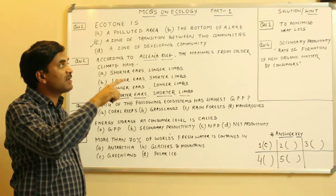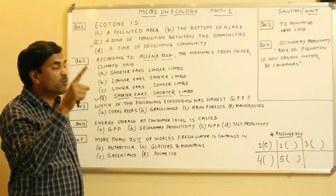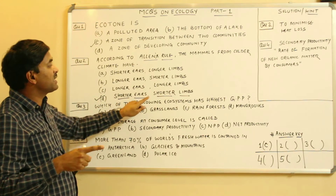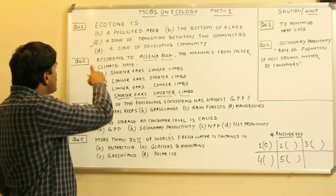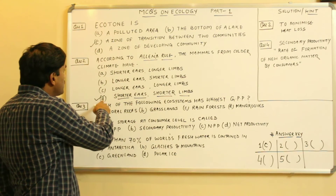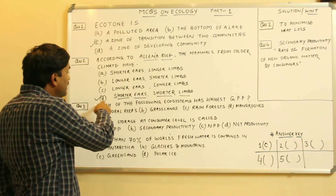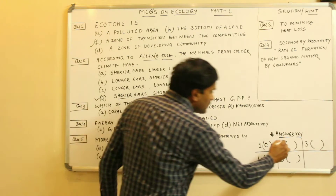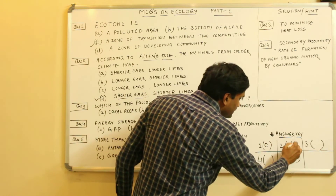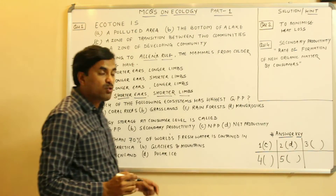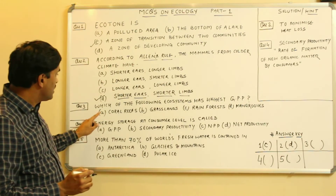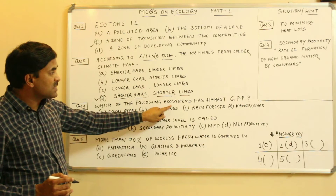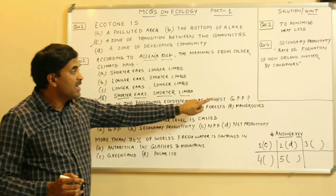So the reason why mammals from colder regions have shorter ears and shorter limbs is to minimize heat loss. Question number two has the answer D. Question number three asks: which of the following ecosystems has the highest gross primary productivity (GPP)?